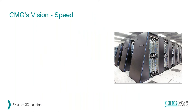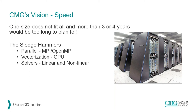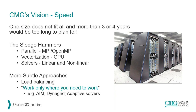With regards to speed, one size doesn't fit all and you don't want to just pick one technology — as the English phrase goes, you don't want to put all your eggs in one basket. There are probably two main approaches to speed. There are what I call the sledgehammers — just hitting things with more power, more hardware: parallel MPI, OpenMP approaches, just adding more cores. The idea of vectorization on graphical processing units, and different types of solver technology to try to speed the process up, both linear and nonlinear solvers. And then there are more subtle approaches such as load balancing or the concept of work only where you need to work.